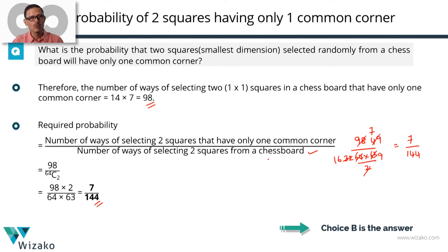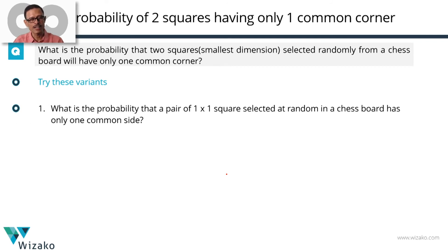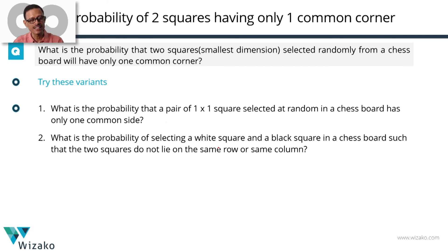There are two variants you should try. The first: what is the probability that a pair of one-by-one squares selected at random from a chessboard has only one side in common? Pick two adjacent rows or two adjacent columns, figure out what is happening, and then extrapolate to get the answer. The denominator is essentially selecting two squares at random — 64C2. The second variant: what is the probability of selecting a white square and a black square such that the two squares do not lie on the same row or same column?